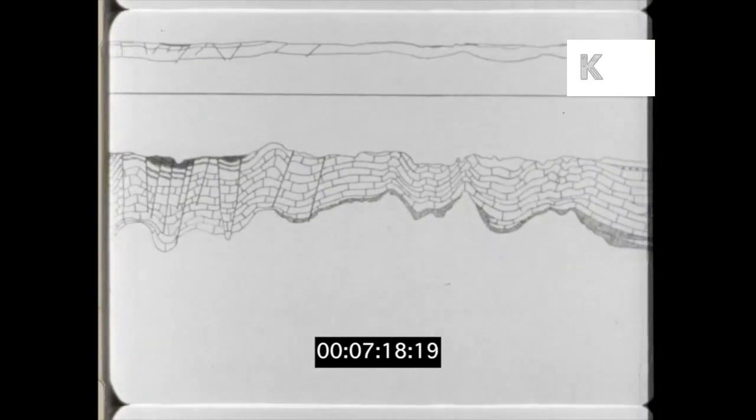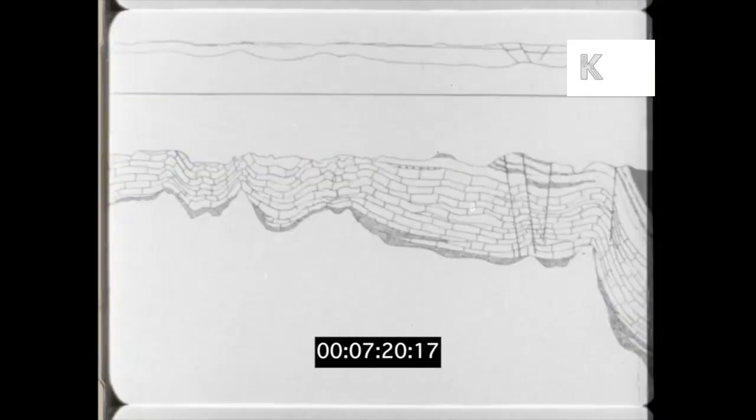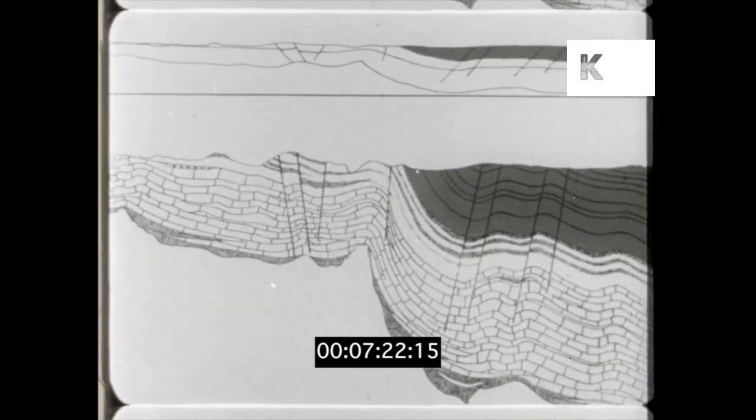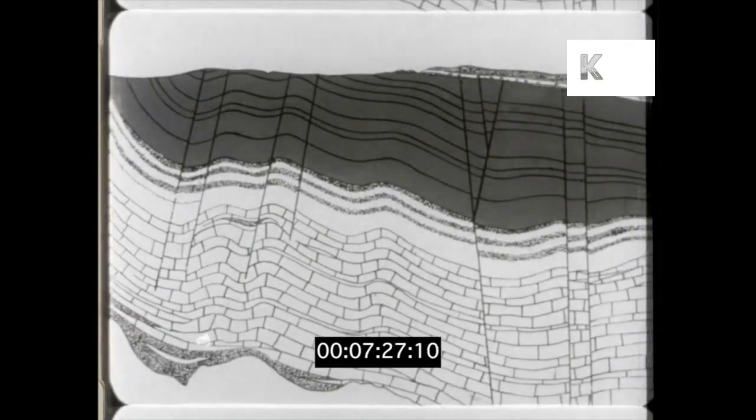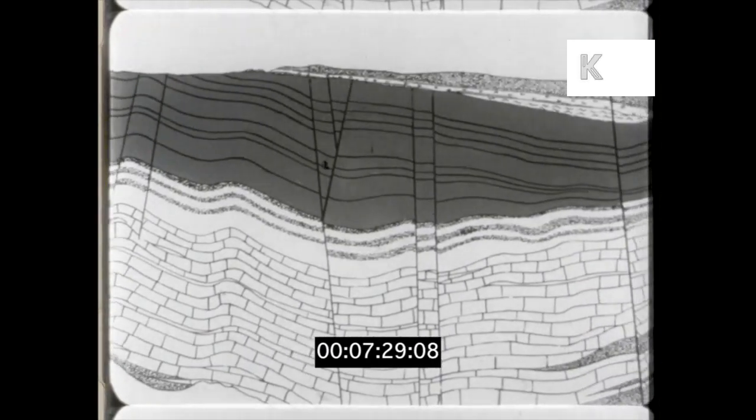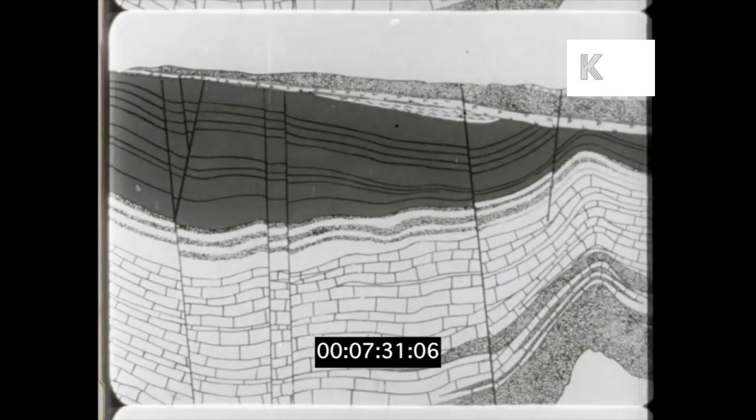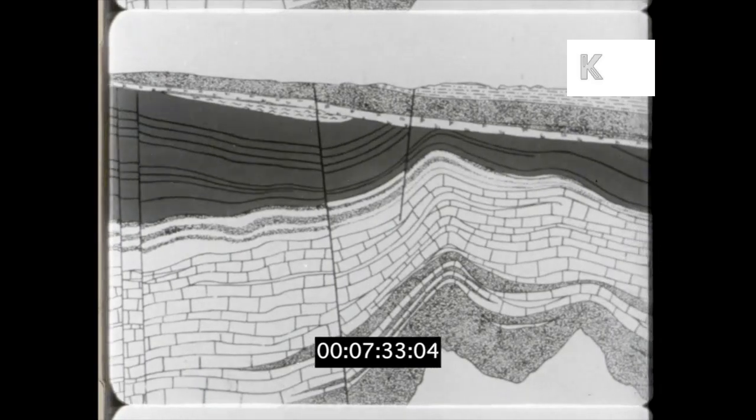We cross the Pennines which were once much higher and contain coal seams that have long since been weathered away. On the other side are the East Midlands coal fields, also coming up to the surface at the foot of the hills and then sloping away deeper and deeper until they are too far down to mine.